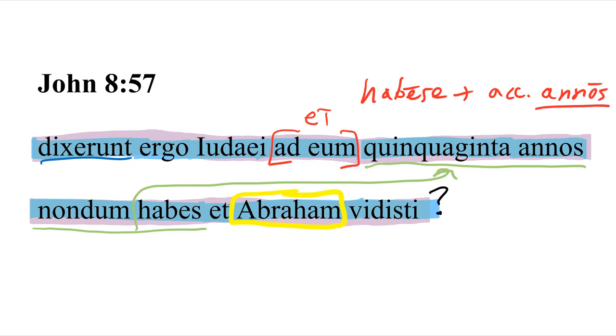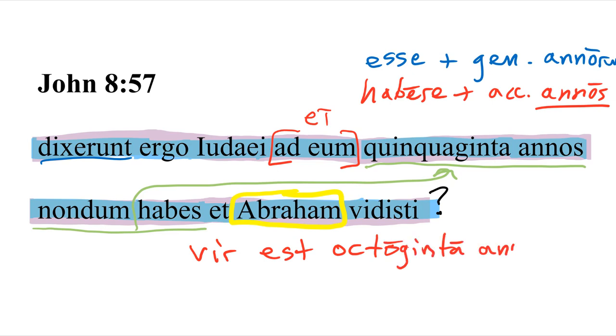The other way to do it is to use a form of esse plus genitive, let's say, annorum, of years. Okay, so you could say, you are, let's say, a vir est octoginta annorum. You are a man of 80 years, literally. That is to say, you're an 80-year-old man.